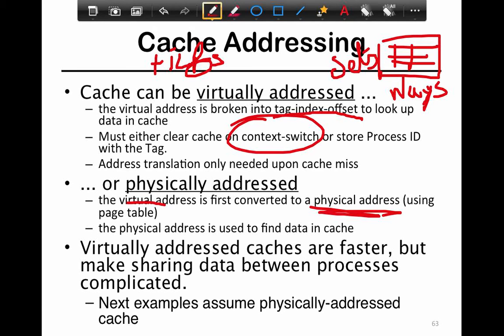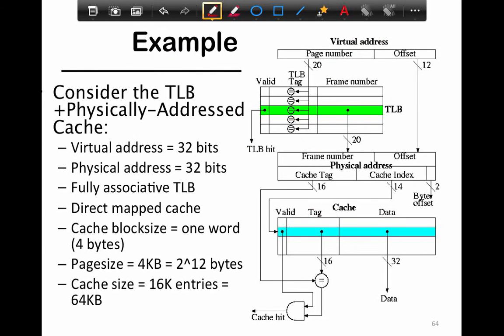The cache could also be physically addressed: the virtual address is first converted to the physical address, and then the physical address is used to find data. So even on a context switch, data can live across context switches even when the TLB is flushed. Virtually addressed caches used to be faster, but they make sharing data between processes complicated. For example, if you wanted the same page to appear in the virtual address of two different processes, you can't really share it because on every context switch your cache will be flushed.